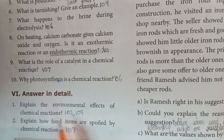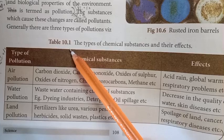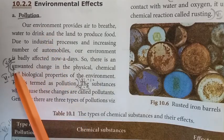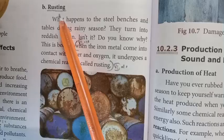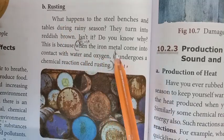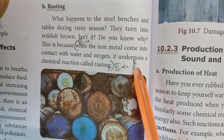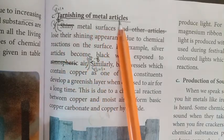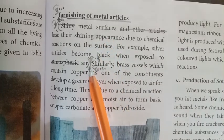Then answer in detail. First question answer from page number 108 — draw Table 10.1. Under pollution heading, sixth line: unwanted change in the physical, chemical and biological properties of the environment. Under rusting heading: when iron metal comes into contact with water and oxygen, it undergoes a chemical reaction called rusting. Under tarnishing of metal articles: metal surfaces lose their shining appearance — mark up to the fifth line.